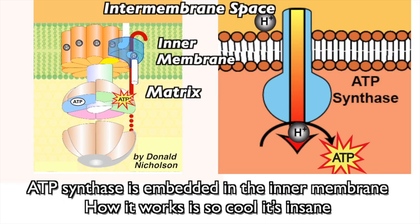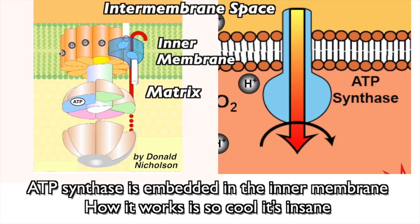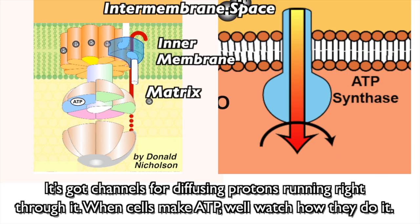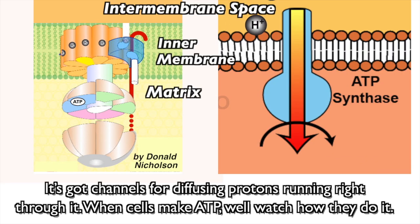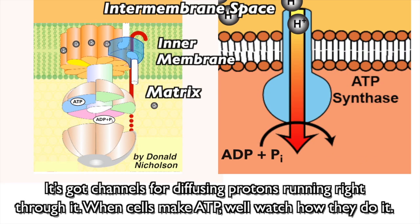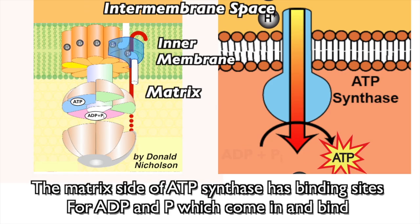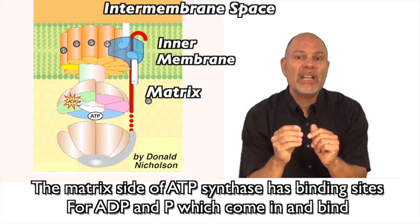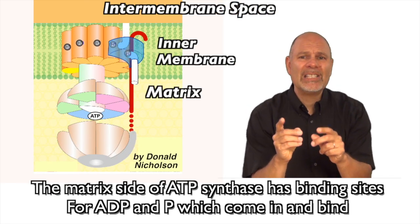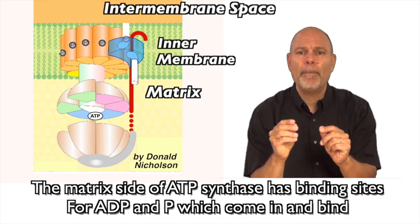ATP synthase is embedded in the inner membrane — how it works is so cool it's insane. It's got channels for diffusing protons running right through it. The matrix side of ATP synthase has binding sites for ADP and P, which come in and bind.